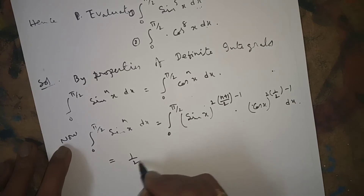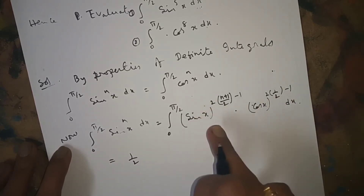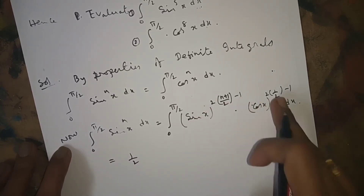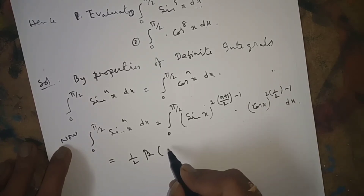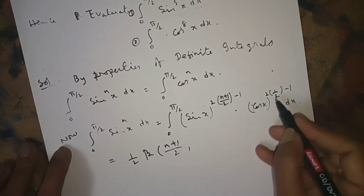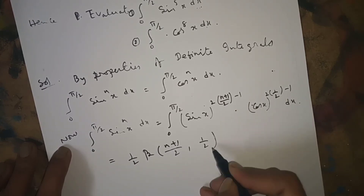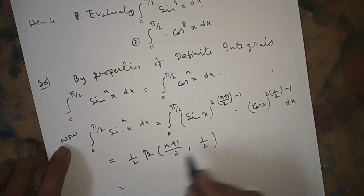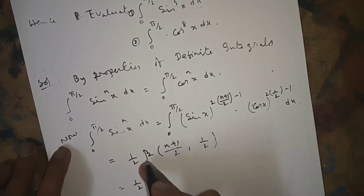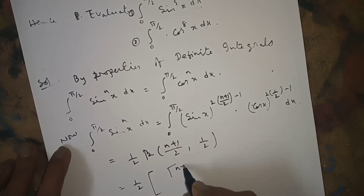This equals (1/2) · B(m, n), using the formula: integral from 0 to π/2 of sin^(2m−1)(x) · cos^(2n−1)(x) dx = (1/2) · B(m, n). In place of m we have (n+1)/2, and in place of n we have 1/2. So we get (1/2) · B((n+1)/2, 1/2). Now we apply the relation between Beta and Gamma functions: B(m, n) = Γ(m)·Γ(n) / Γ(m+n).